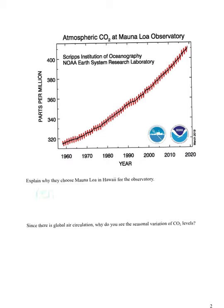The reason they chose that location is its remoteness — local impacts don't affect it. That's really why they decided to go with Mauna Loa: it's in the middle of the Pacific Ocean, isolated from local pollution sources.